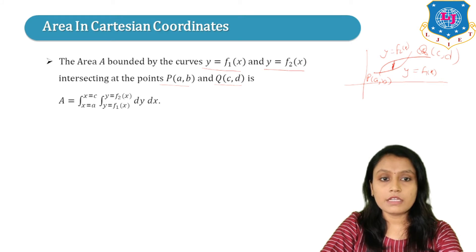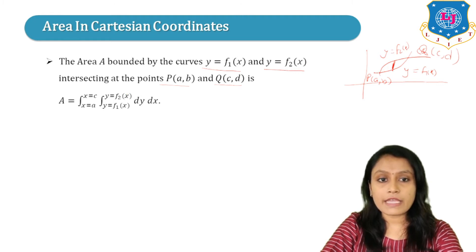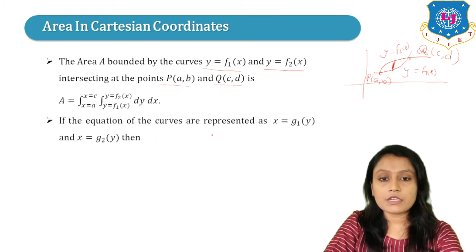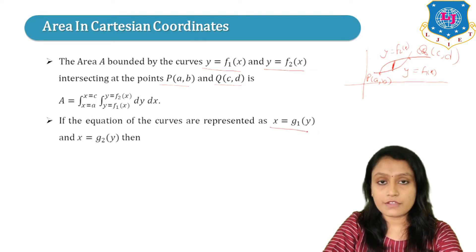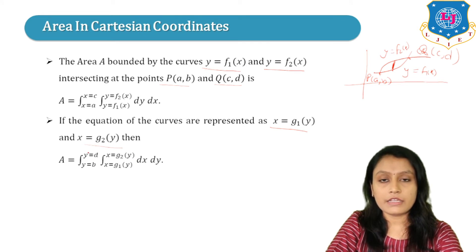Here we are making a vertical strip. The vertical strip starts from F1(X) and ends at F2(X), so the limits of Y are F1(X) to F2(X). Moving this strip, the X coordinate changes from A to C, so the limits of X are A to C. If the curves are expressed as X = G1(Y) and X = G2(Y), the area is given by double integration with limits B to D for Y and G1(Y) to G2(Y) for X, of dX dY.